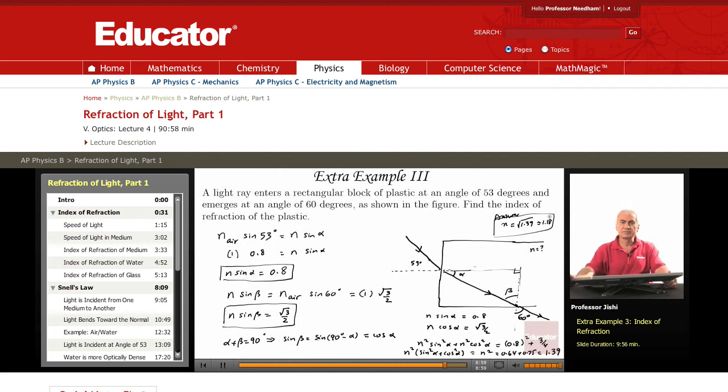This is the index of refraction of the plastic. Again, what's the moral here? Same thing like in the previous problem. You look at the figure and you see two refractions, so you have to apply Snell's law twice. So that's exactly what we did. Beyond that, it's being smart about trig. Like here, you have to see that the angle beta plus the angle alpha is 90 degrees, and that allows you to see that sine beta is same as cosine alpha.